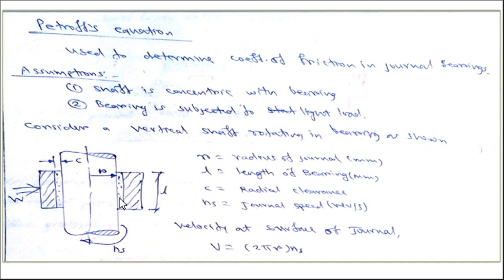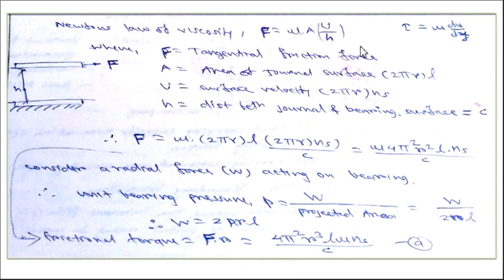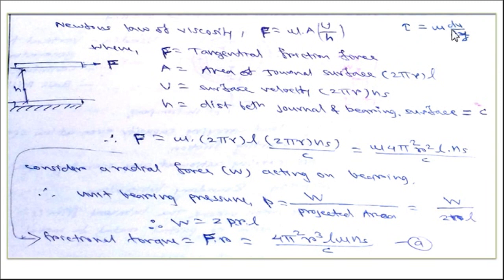The velocity at the surface of the journal is given by 2πR·ns. Using Newton's law of viscosity, the shear stress is given by τ = μ(∂u/∂y). The shear stress equals the viscosity times the velocity gradient. Setting shear stress as force per area and rearranging, the tangential frictional force F = μ·A·u/h, where A is the journal surface area (2πRL), u is the surface velocity (2πR·ns), and h is the clearance C.